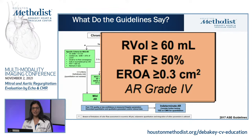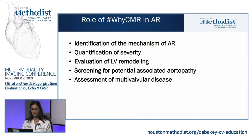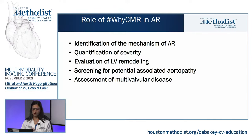When the mechanism is unclear, quantification is uncertain, or there is discrepancy with clinical findings, TEE or CMR imaging can be very helpful. CMR is used in aortic regurgitation to identify the mechanism, quantify severity, evaluate LV remodeling, screen for associated aortopathies, and to quantify individual valve lesions in multivalvular disease.